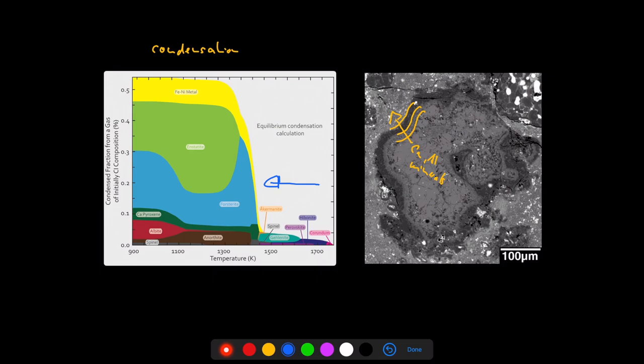spinel, anorthite, sometimes maybe even calcium-rich diopside at the outermost layer of these CAIs. This has been first described by Wark and Lovering in 1977.